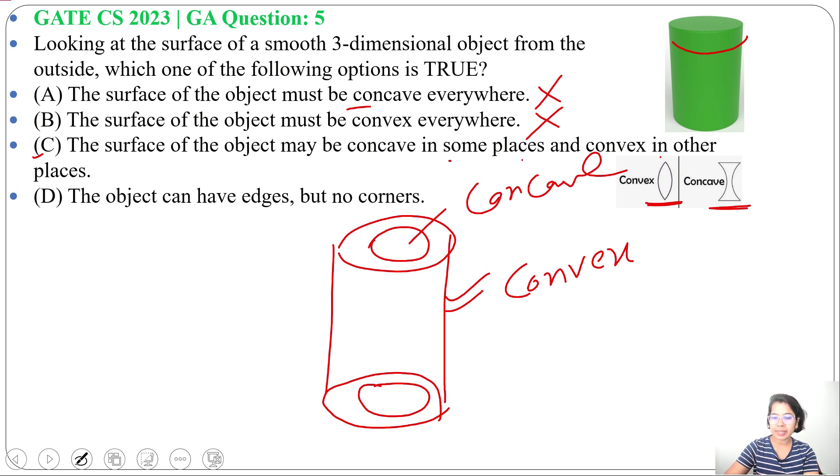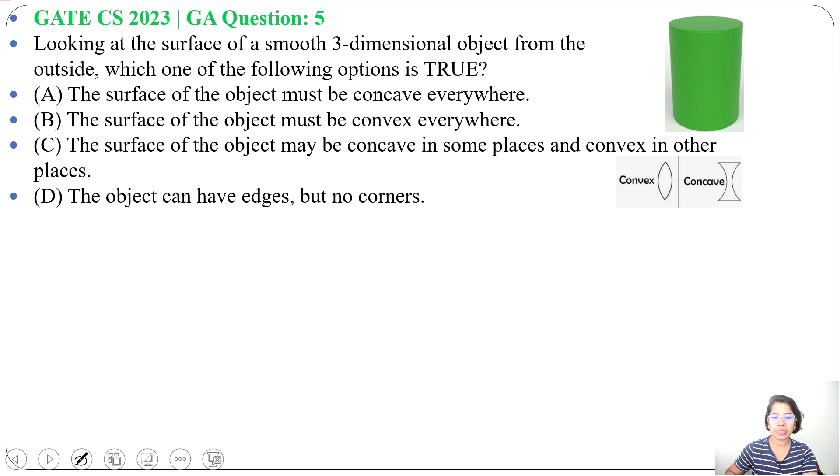Like here, convex is from outside and concave from inside. So some places it is concave, some places it is convex. You can say there may be a combination of two places.